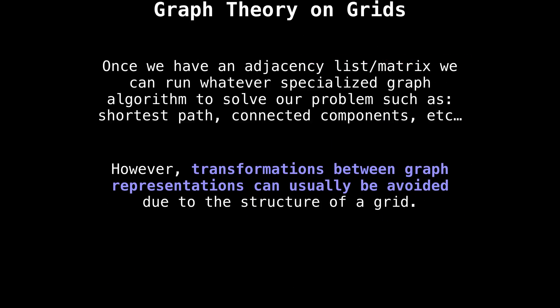Once we have an adjacency list or an adjacency matrix, we are able to easily run whatever specialized graph algorithm we need to solve our problems, such as finding the shortest path, finding connected components, etc. However, transformations between graph representations can usually be avoided due to the structure and the nature of a grid. Let me explain.